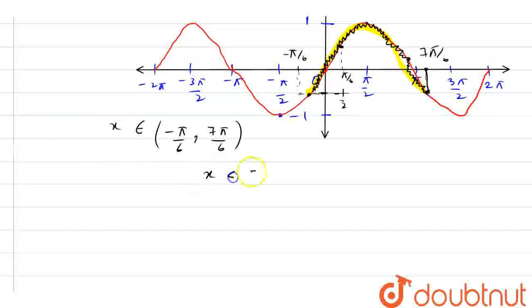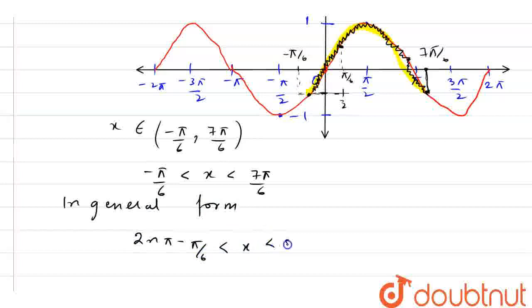So in general form, I can write it as 2nπ minus π by 6 to x to 2nπ plus 7π by 6.